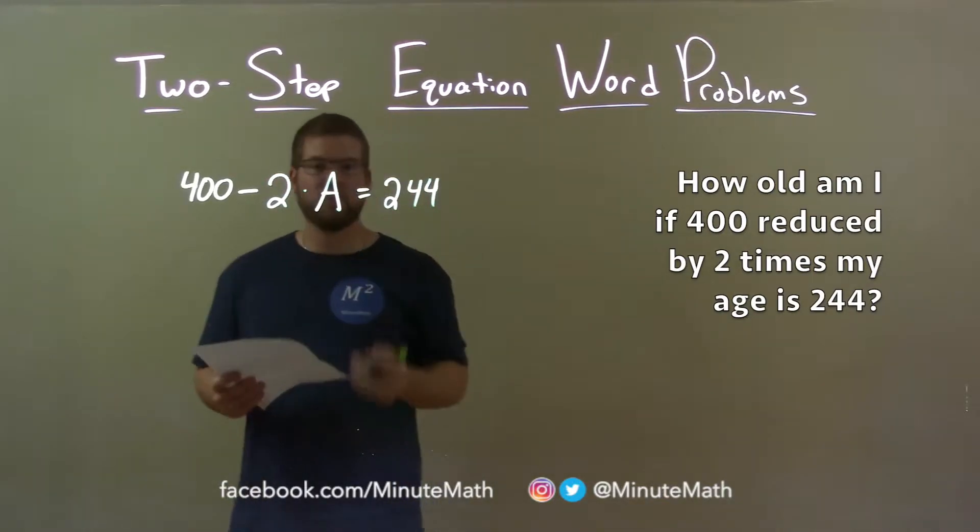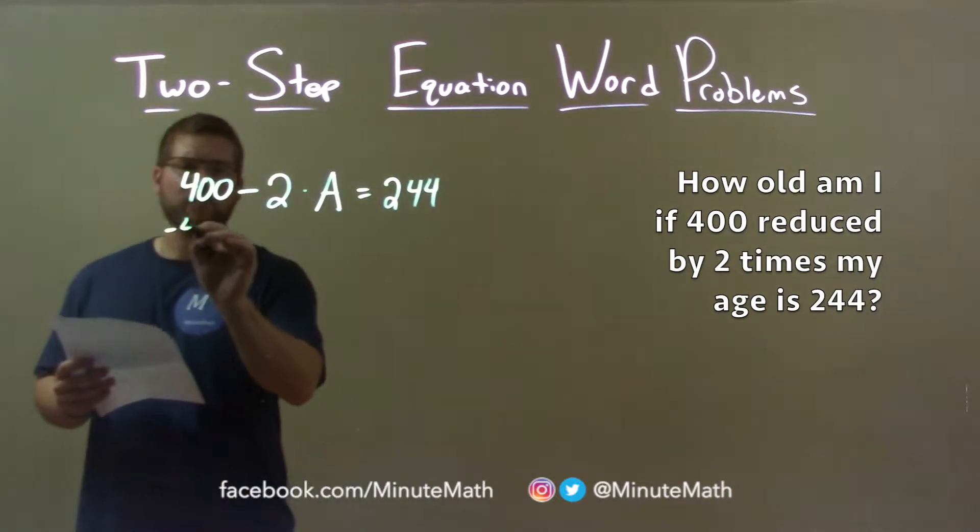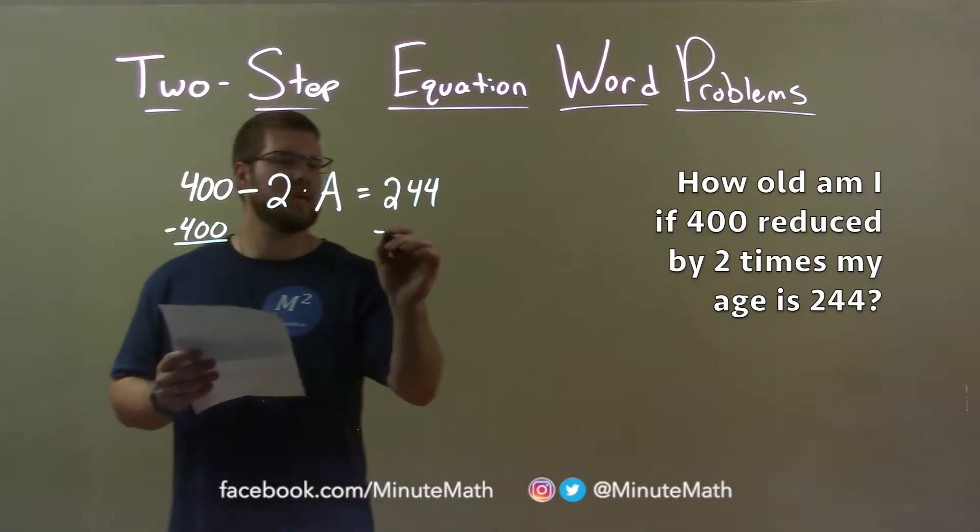Well now that we have this, we have to solve for A. I subtract 400 from both sides. That's my first step.